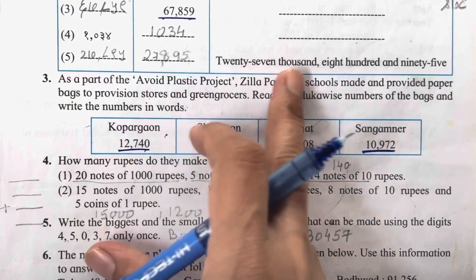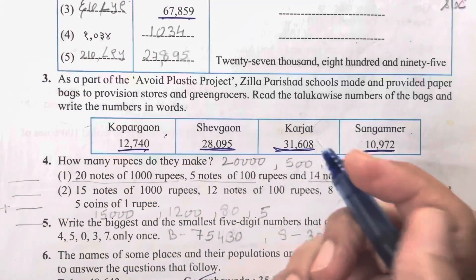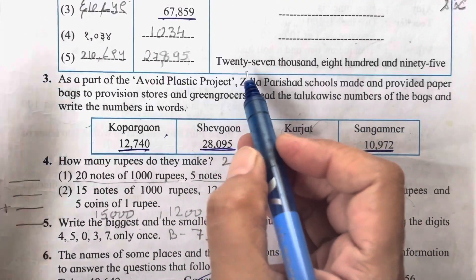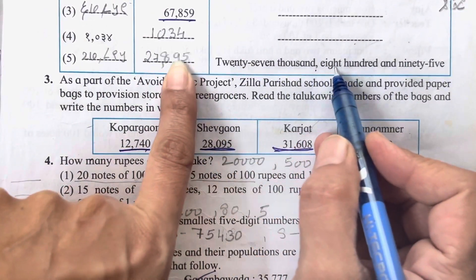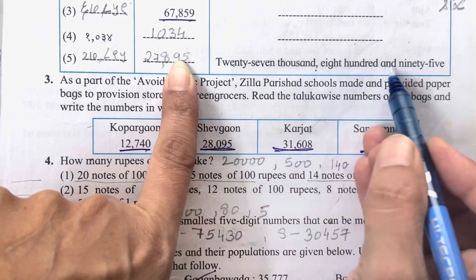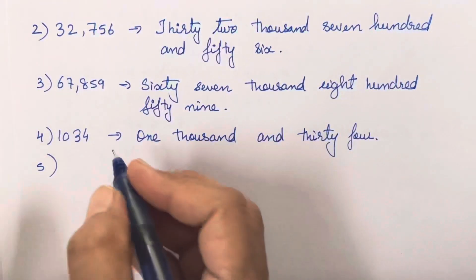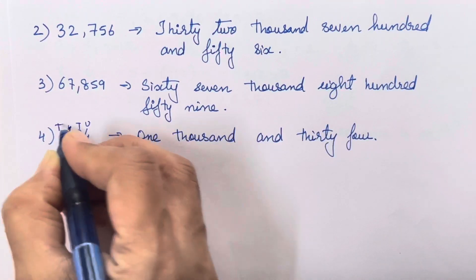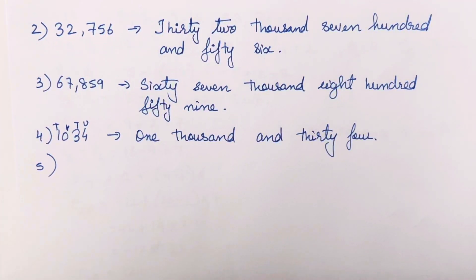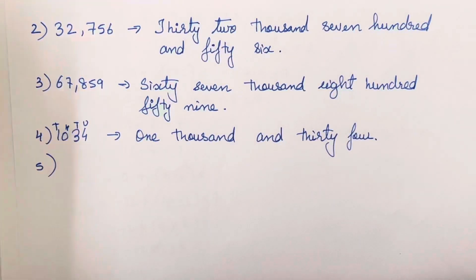For the fifth one, numbers are given in words and you have to write them as numerals. For example, twenty-seven thousand eight hundred and ninety-five. While reading, you should write unit, tens, hundreds, and thousands columns as it becomes very easy to understand and write.